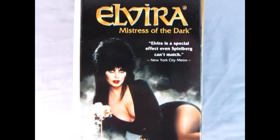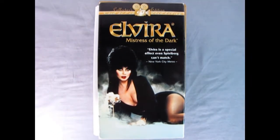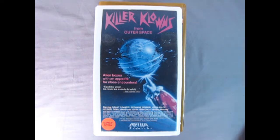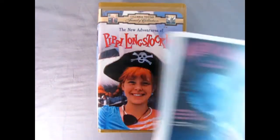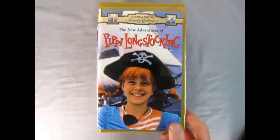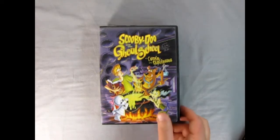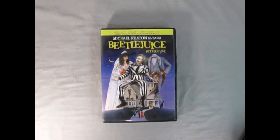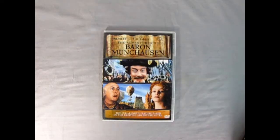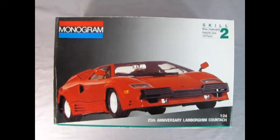1988 saw huge amounts of movies, music, and TV shows and some of those were Elvira Mistress of the Dark, Killer Clowns from Outer Space, The New Adventures of Pippi Longstocking, Scooby-Doo and the Ghoul School, Beetlejuice, and who could forget The Adventures of Baron Munchausen. We also got this really amazing 25th anniversary Lamborghini Countach from Monogram.